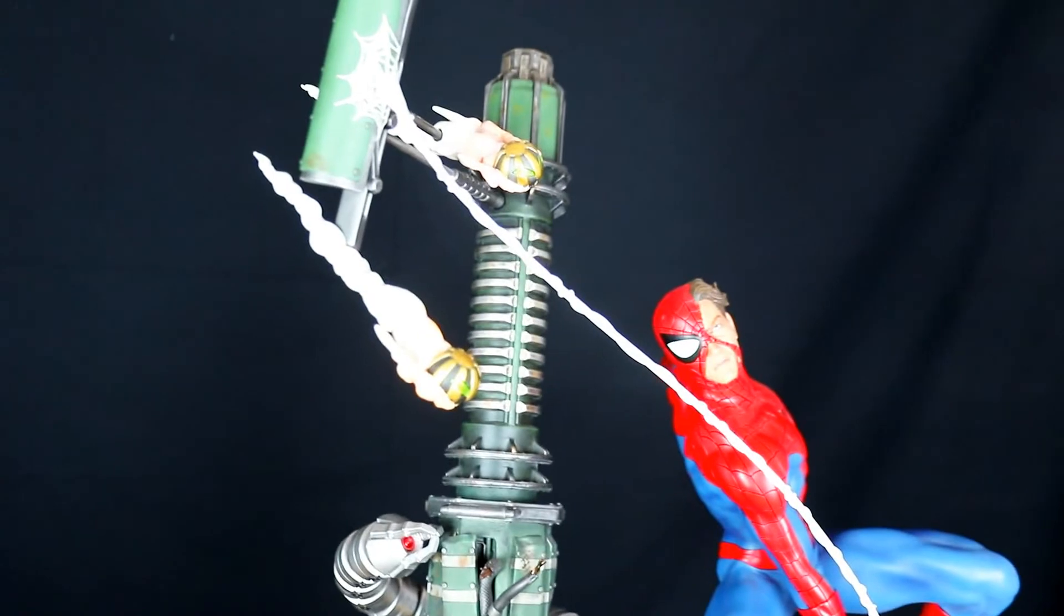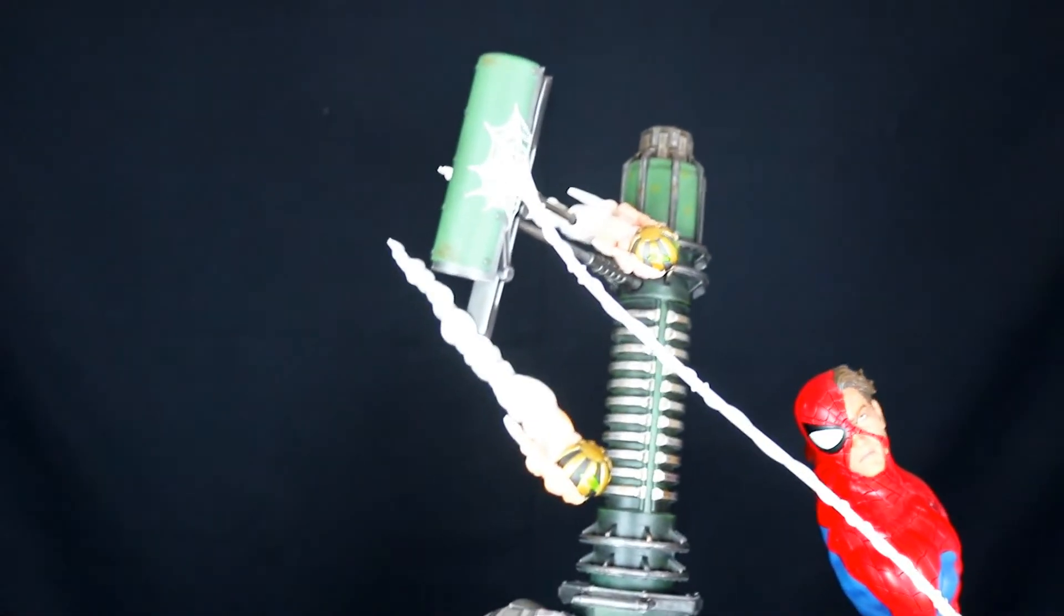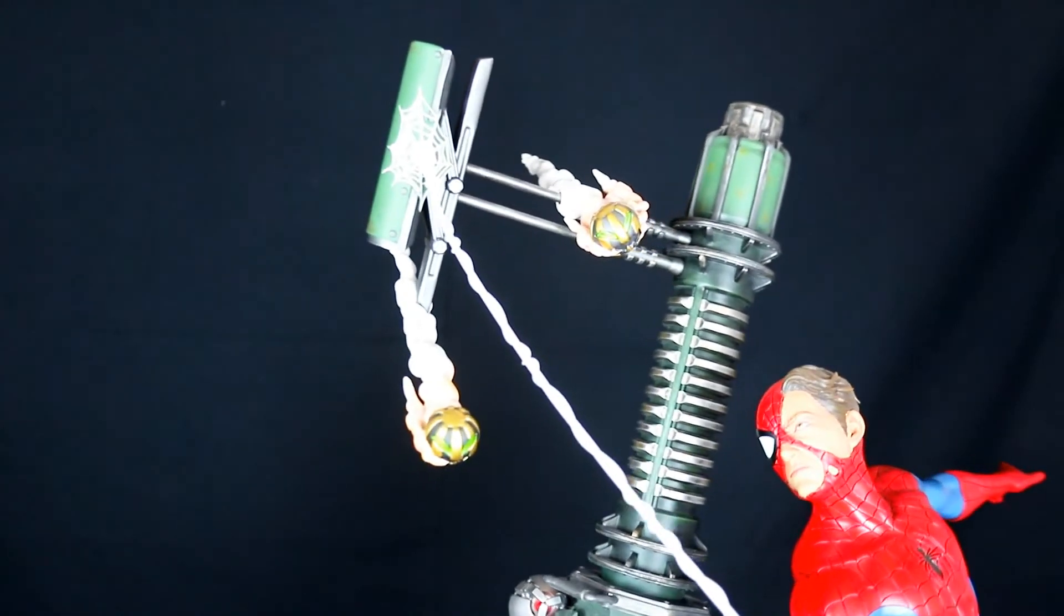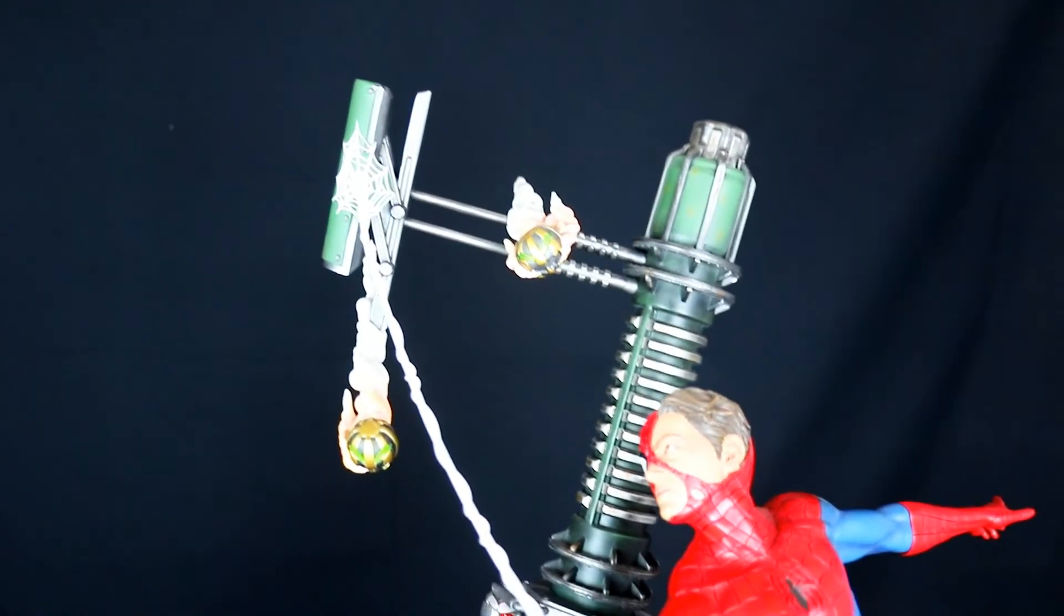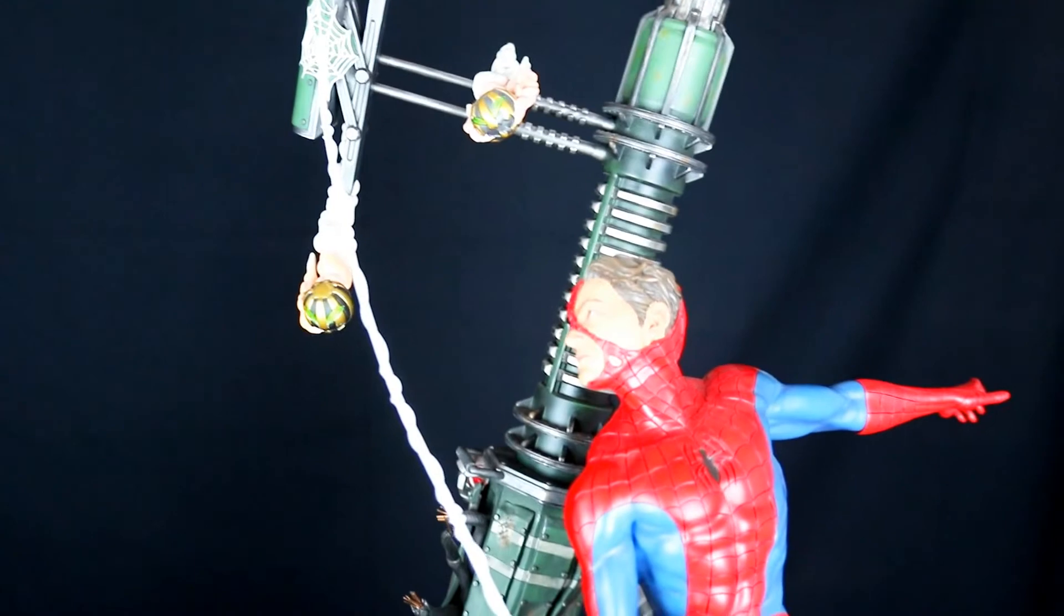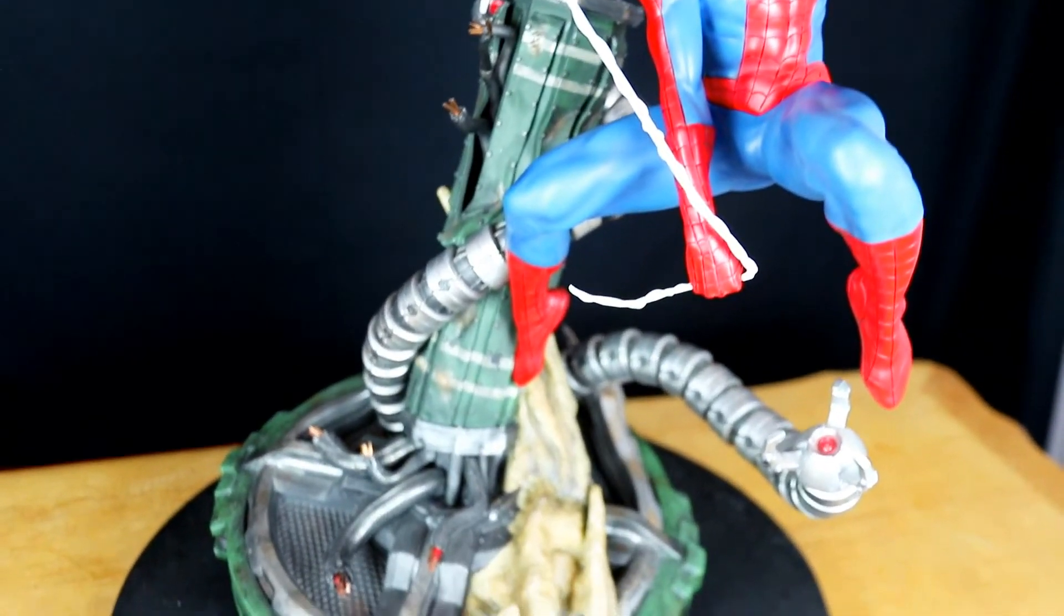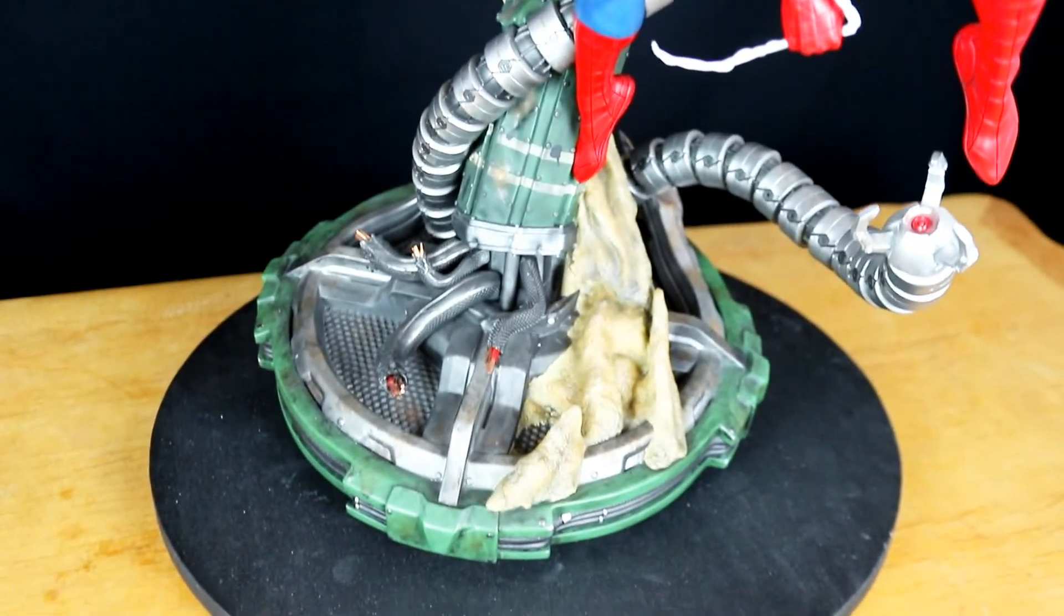Voilà. Après sur le haut on a du coup la toile accrochée, les petites sphères, et le haut du pylône. Donc bon ça peut paraître simple mais franchement il y a quand même beaucoup de détails sur cette pièce et elle est d'un ensemble vraiment très chouette.